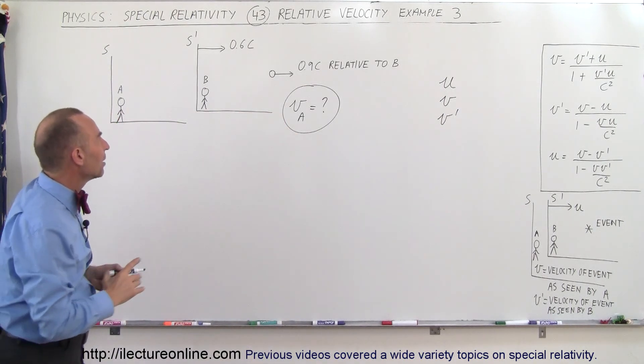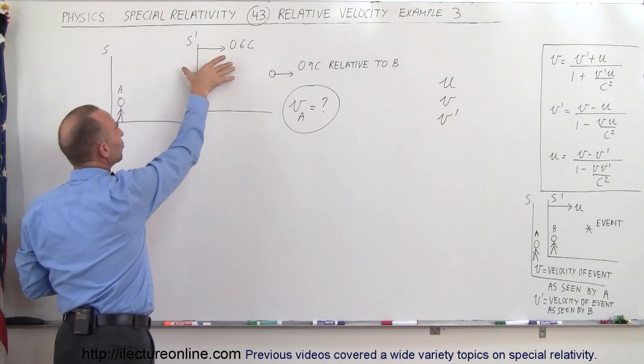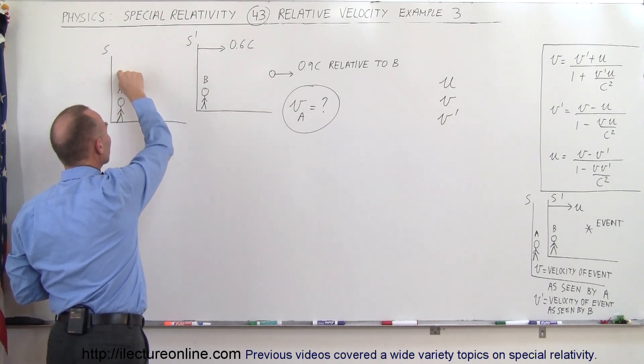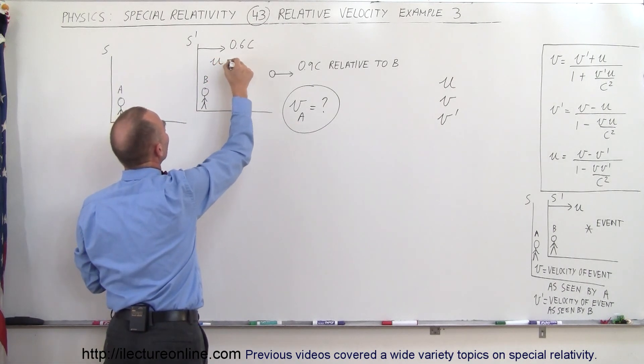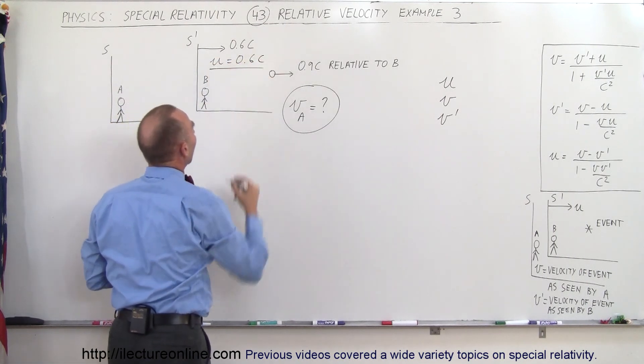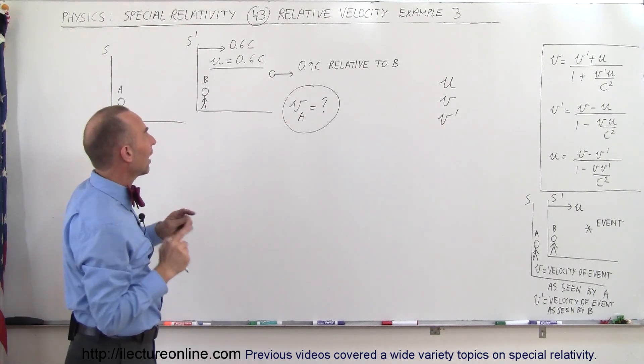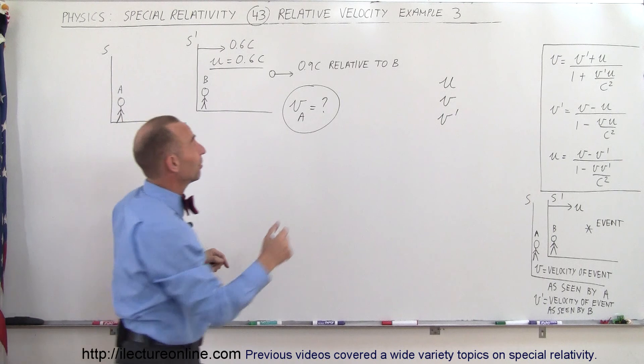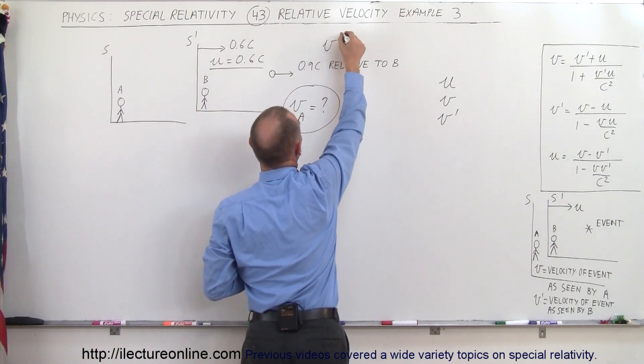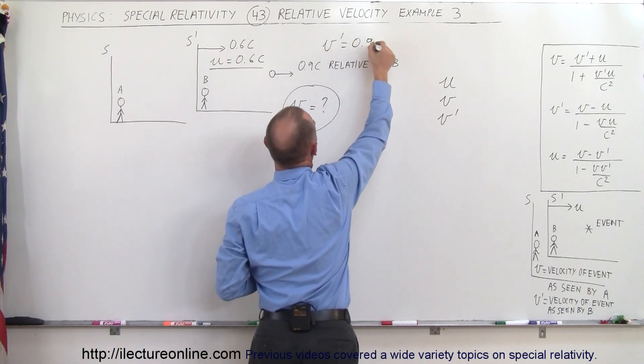Well first of all, the velocity of the reference frame that's moving relative to the reference frame that's stationary would be the velocity U. So in this case we can say that U is equal to 0.6C. Now by definition, the velocity of the event as seen by the moving reference frame is V prime. So therefore we can call this V prime. V prime is equal to 0.9C.